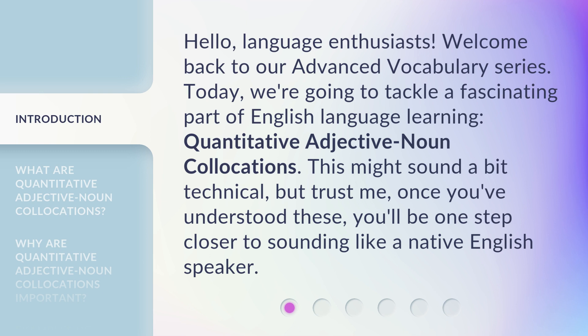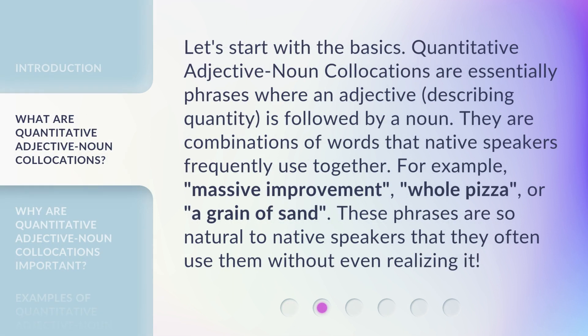This might sound a bit technical, but trust me, once you've understood these, you'll be one step closer to sounding like a native English speaker. Let's start with the basics. Quantitative Adjective Noun Collocations are essentially phrases where an adjective describing quantity is followed by a noun. They are combinations of words that native speakers frequently use together — for example, massive improvement, whole pizza, or a grain of sand. These phrases are so natural to native speakers that they often use them without even realizing it.